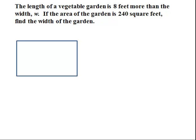So we have a rectangular garden here, and we're going to label our diagram. We know that the length L is 8 feet more than the width w, so the length is w plus 8, and it stated that the width has a measure of w.